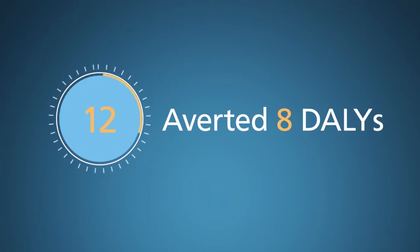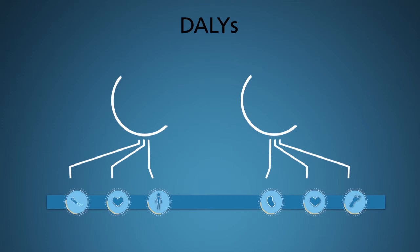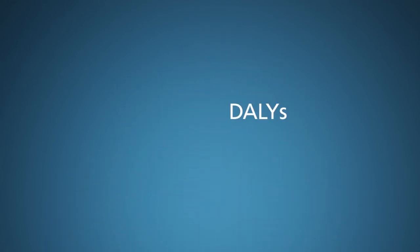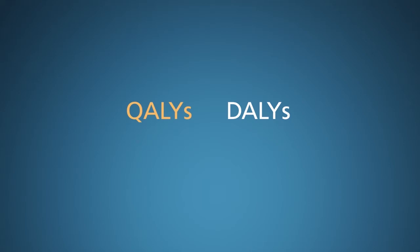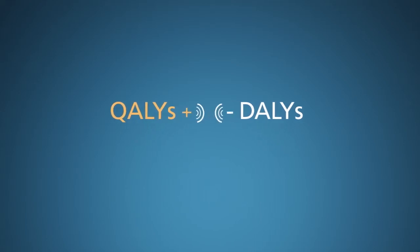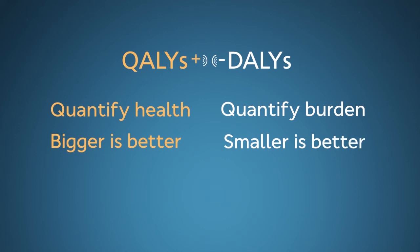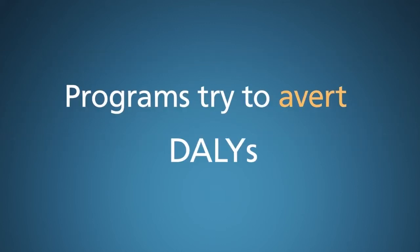DALYs were invented 30 years ago to combine separate data on disease mortality and morbidity being recorded by the World Health Organization. It complements another common metric already in use at the time, known as QALYs, or Quality Adjusted Life Years. DALYs and QALYs both incorporate disease-related reductions in length of life and the negative effects of morbidity, but they consider the matter from opposite perspectives. QALYs quantify health, so bigger values are better, while DALYs quantify disease burden and thus smaller DALY values are better. Health programs try to avert DALYs. Other than their opposite sign, DALYs and QALYs are almost equivalent.